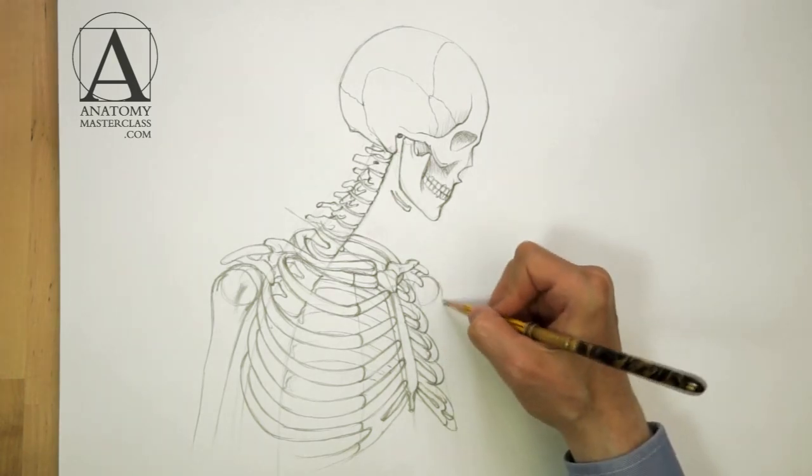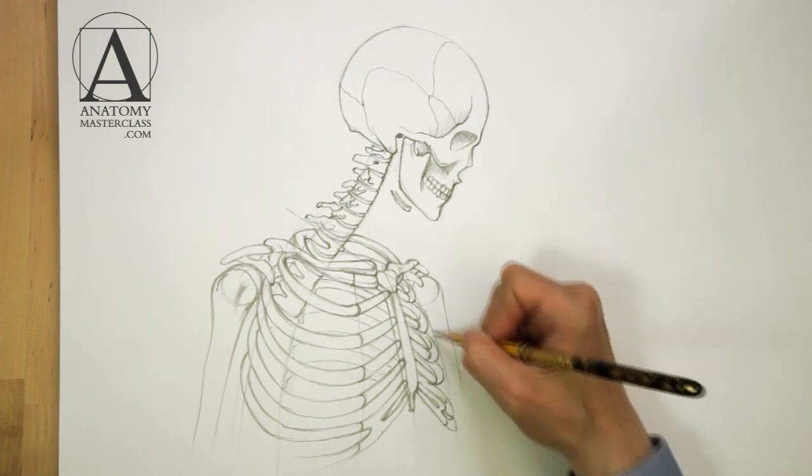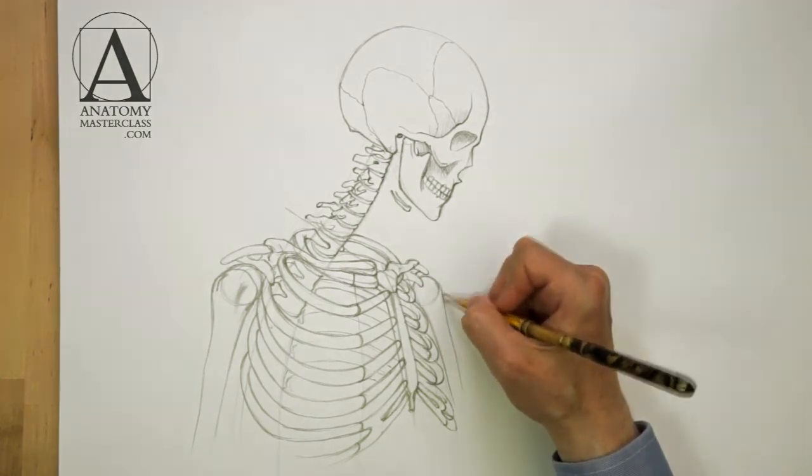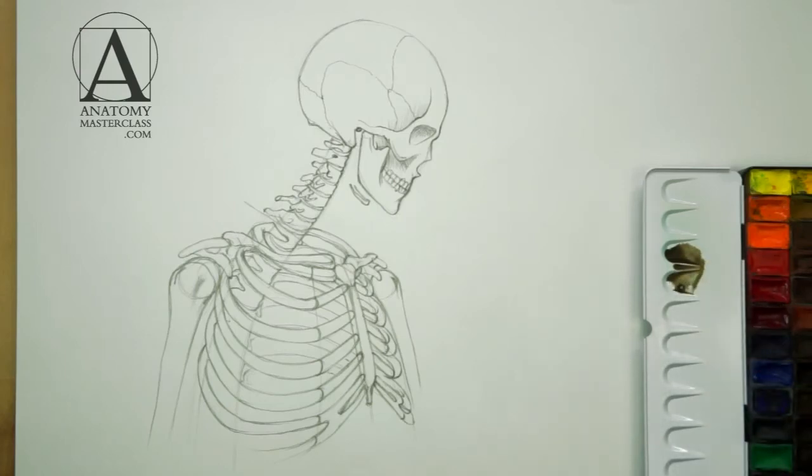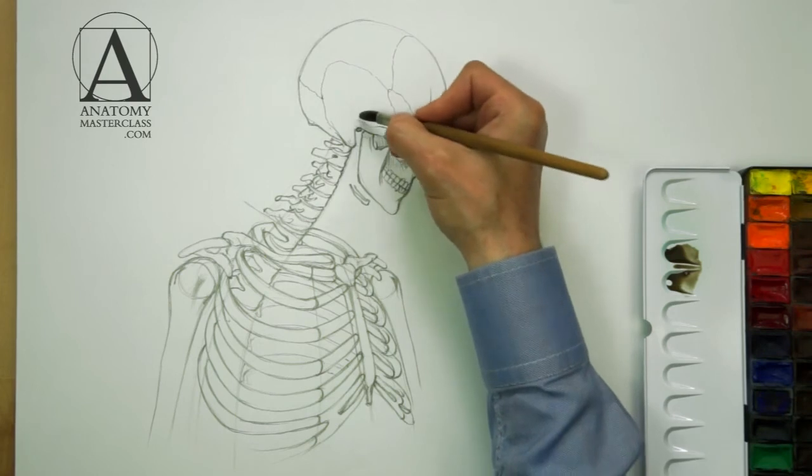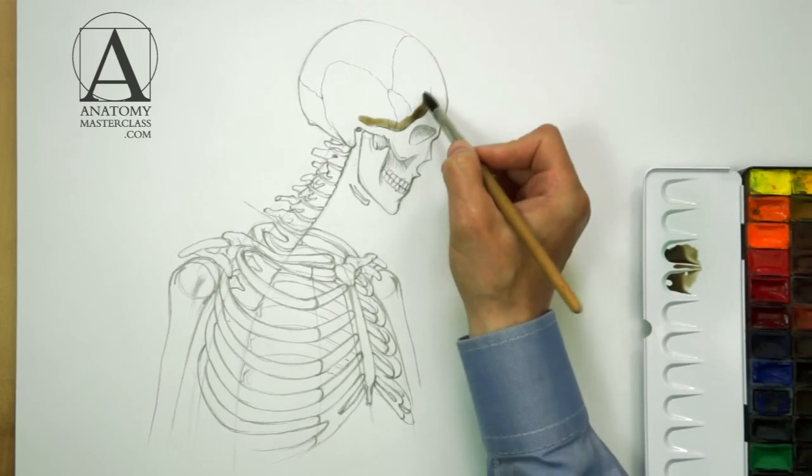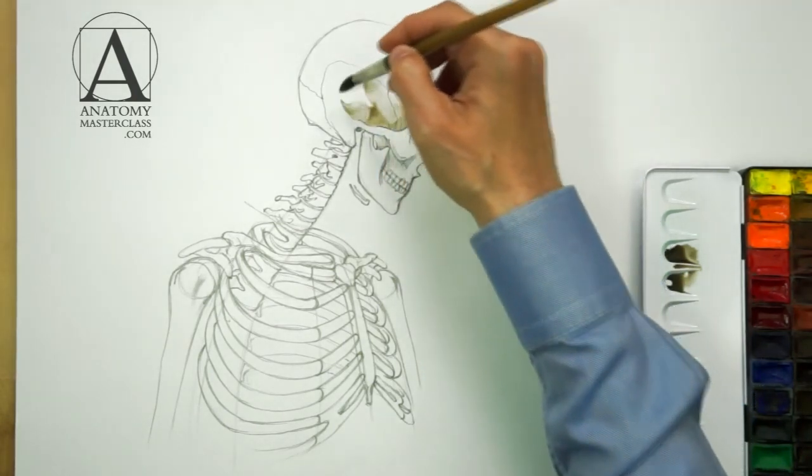We will examine all major muscles of the shoulder region in the next video. To depict the three-dimensional nature of these bones, I will apply a watercolor wash. For this purpose, I will use a single color tint. Such technique is called the grisaille.